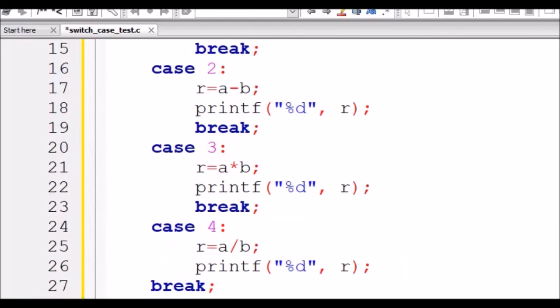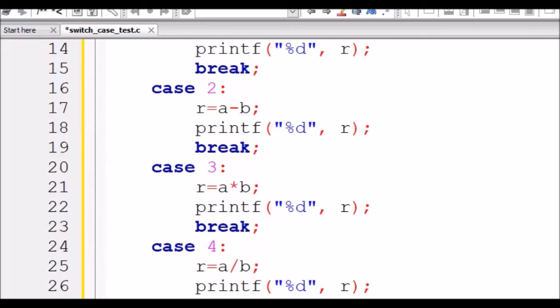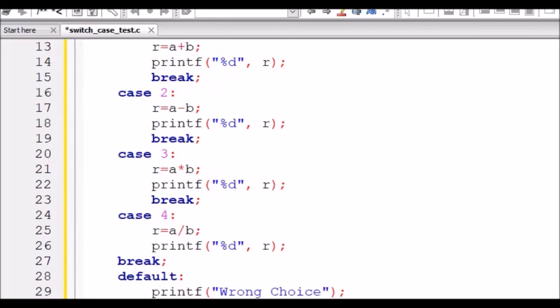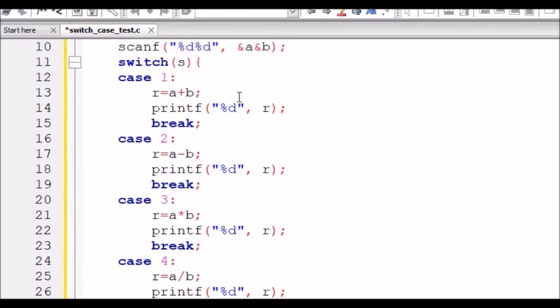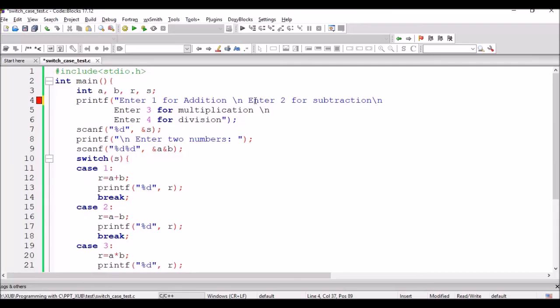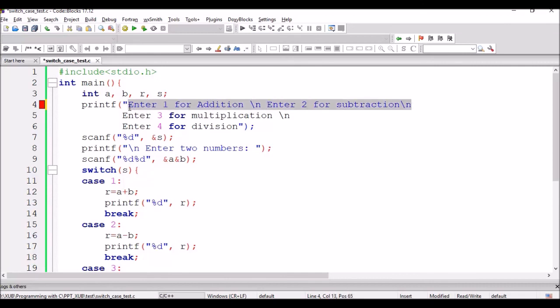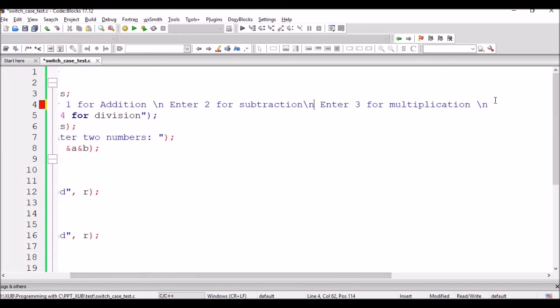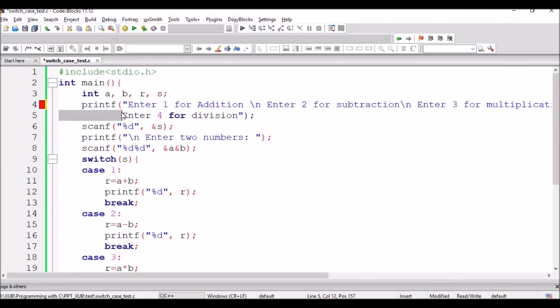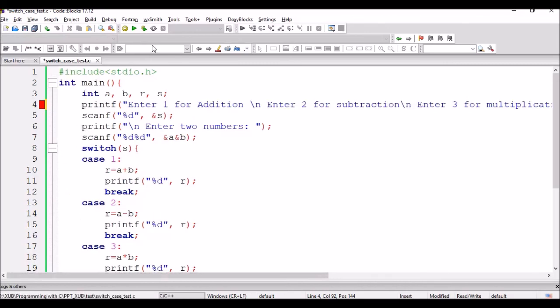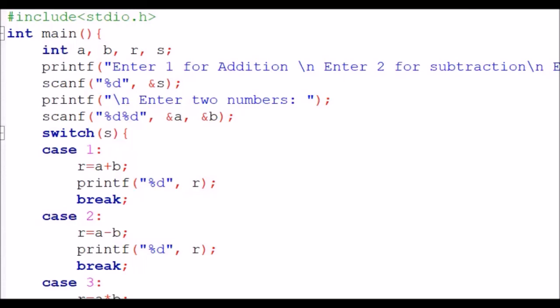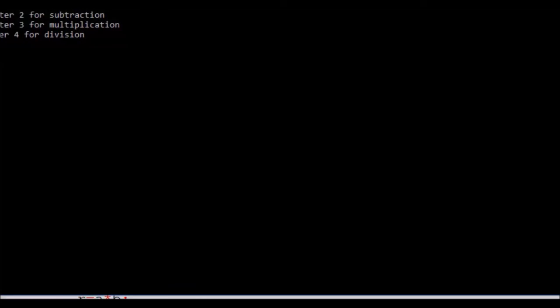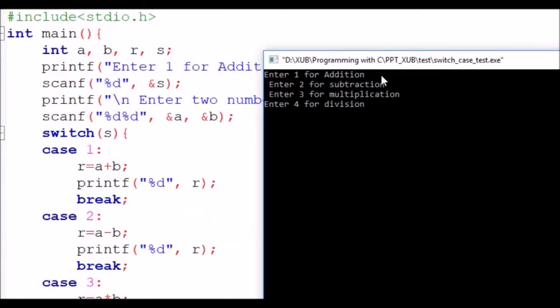This is the switch block. So let's run it. I am just removing these things. Enter 1 for Addition, Enter 2 for subtraction, 3 for multiplication and 4 for division.